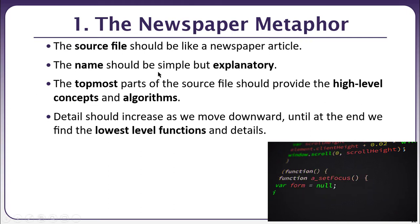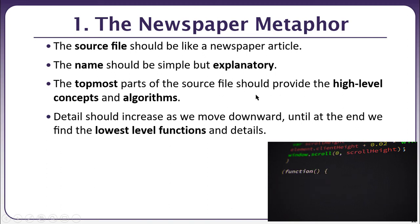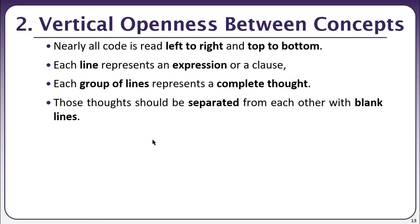The name of the source file should be simple but self-explanatory, as discussed in the rules related to naming conventions for source code files, variables, classes, and functions. The topmost part of the source code file should provide the high-level concepts and general algorithms to be used in that file, and the detail should increase as we move downward until we find the lowest-level functions and details. Another guideline relates to vertical openness between concepts: all code is read left to right and top to bottom — this is the general convention.